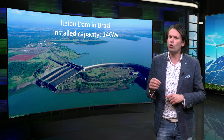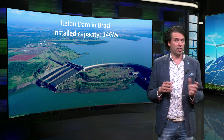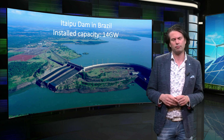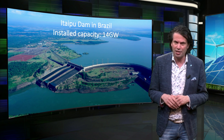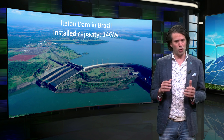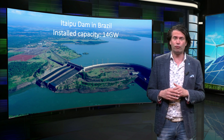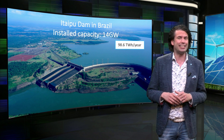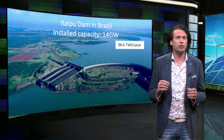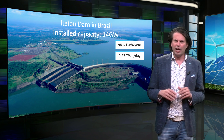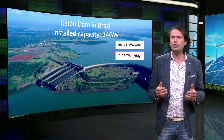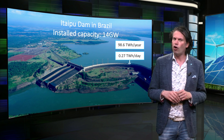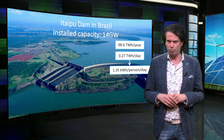As an example, we take a close look at the Itaipu dam on the border of Brazil and Paraguay, to get a feeling of how to estimate the potential of hydro energy. The Itaipu dam is the second largest hydropower plant on the planet. It has a total installed generation capacity of 14 GW and has reached a record energy generation of 98.6 TWh per year, or 0.27 TWh per day. If we assume the generated energy is evenly used by the 200 million inhabitants of Brazil, we arrive at a total electricity generation of 1.35 kWh for every person every day.